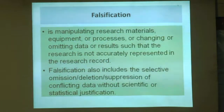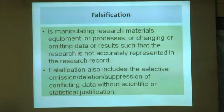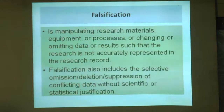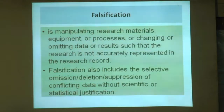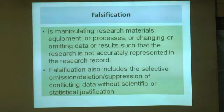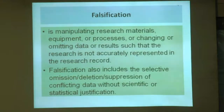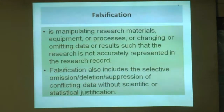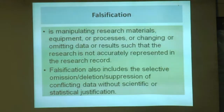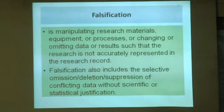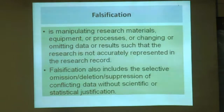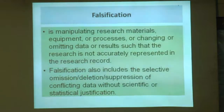There is another crime in the academic fraternity — that is falsification. What is falsification? It is the manipulating of research material, equipment, or process, or changing or omitting data or results such that the research is not accurately represented in the research record. You do not even quote the source of chemicals. Falsification also includes the selective omission, deletion, or separation of conflicting data without scientific or statistical justification. This is most common in drawing graphs and figures.